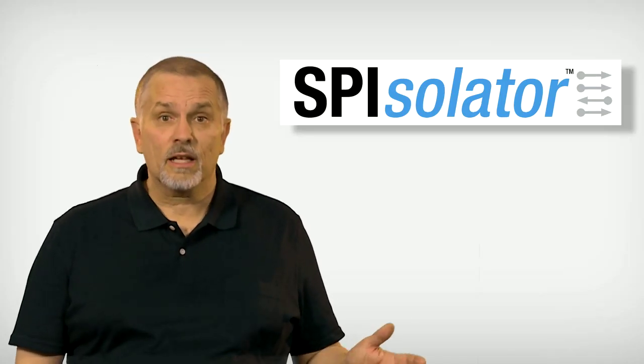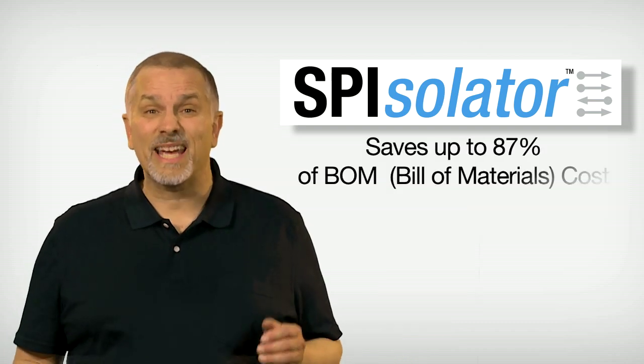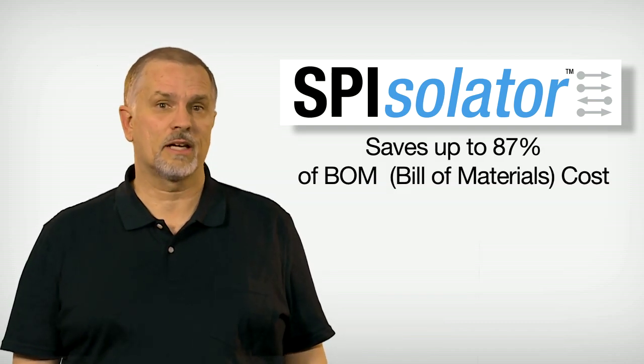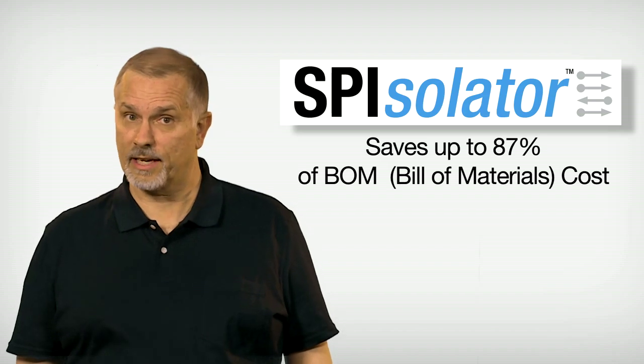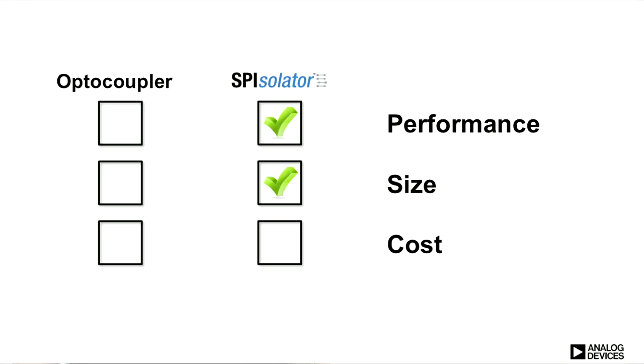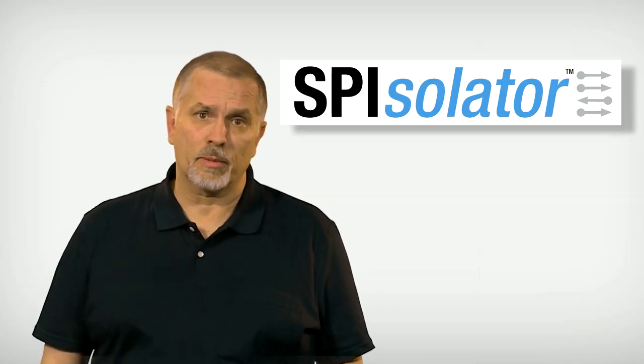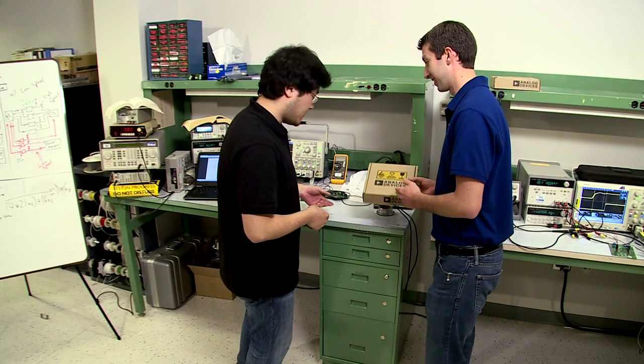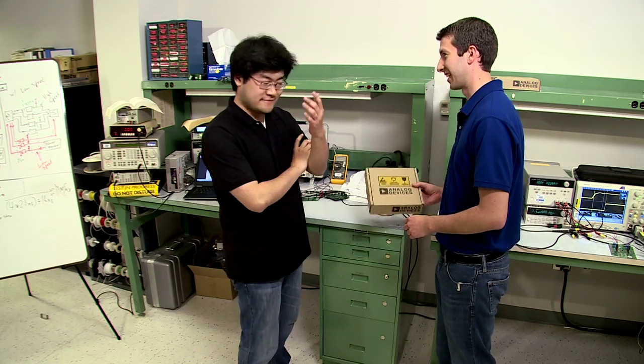Cost? The Spisolator saves up to 87% of the BOM cost, not to mention design time. The Spisolator is the clear winner of the SPI Isolation Challenge. Intern 1 was brought down by the optocoupler's lower performance, larger size, and higher cost.